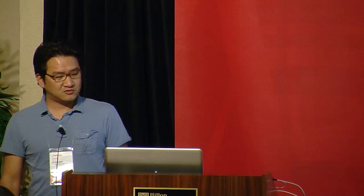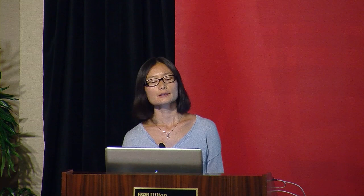Now the real analysis part. I want to talk about some examples of network analysis, starting with centrality. We have about 11 centrality functions, including degree centrality, closeness centrality, and so on.